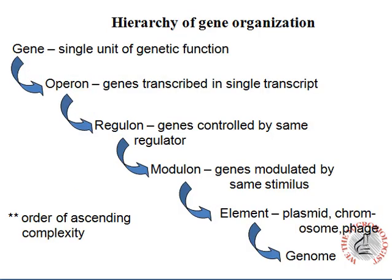If you look at the hierarchy of gene organization in ascending order of complexity, the simplest unit is the gene. Next comes the operon — a set of genes regulated by a single promoter. Then comes the regulon, where multiple operons are controlled by a single regulator. After that comes the modulon, where genes are modulated by the same stimuli, triggering synthesis of certain proteins to perform specific functions for the bacterium.